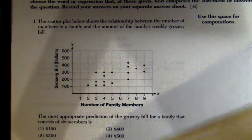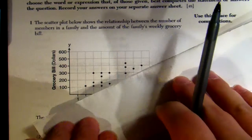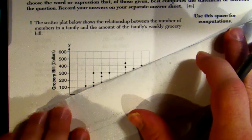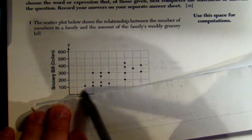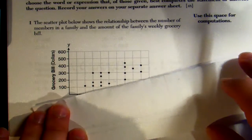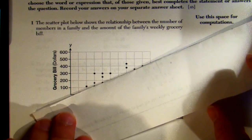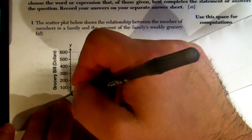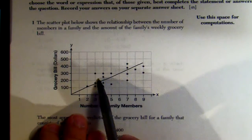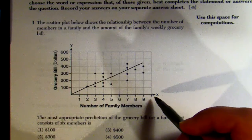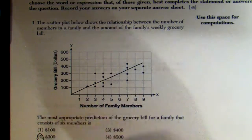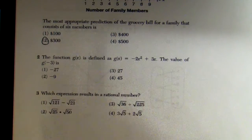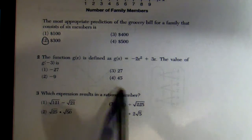If you have zero family members you're not going to spend anything, so we draw the line of best fit with the same amount of dots on top as on the bottom. There's the line — looks pretty good. So for six family members, we go up and we're at $300.